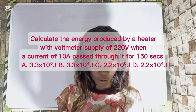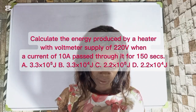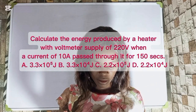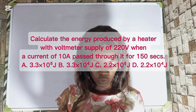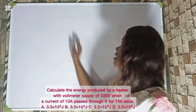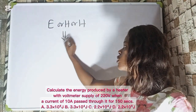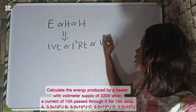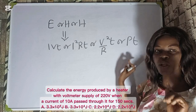Calculate the energy produced by a heater with a voltage supply of 220 volts when a current of 10 amperes passes through it for 150 seconds. Options: A) 3.3 × 10⁵ J, B) 3.3 × 10⁴ J, C) 2.2 × 10⁵ J, D) 2.2 × 10⁴ J. Energy, heat, and work done are the same thing here. The formula is E = IVT, or I²RT, or V²/R × T, or PT. We can use any of these depending on the question.